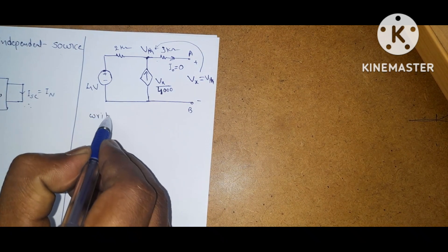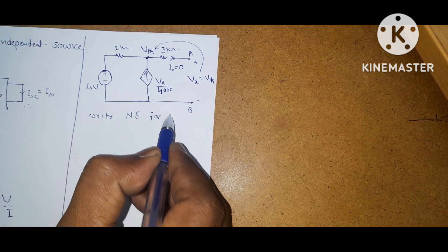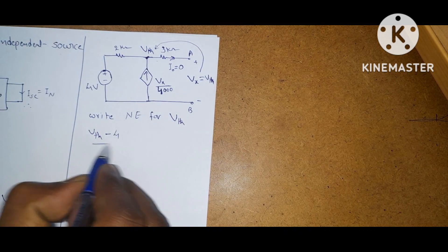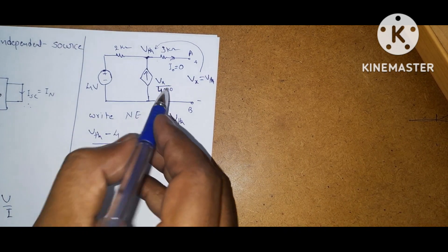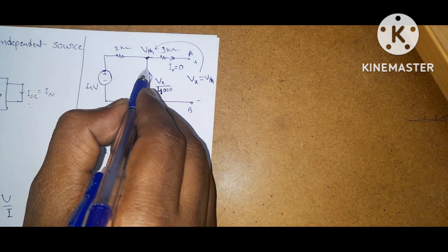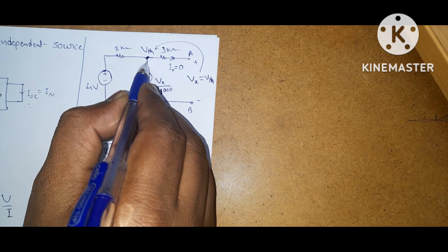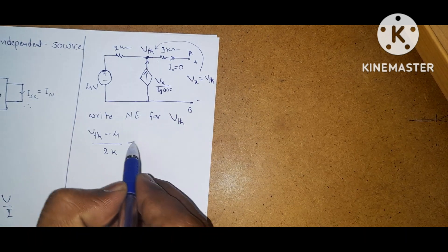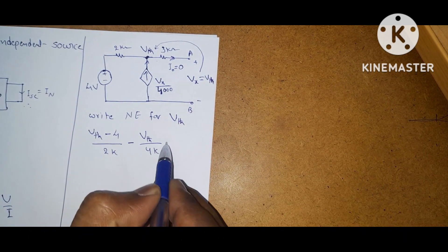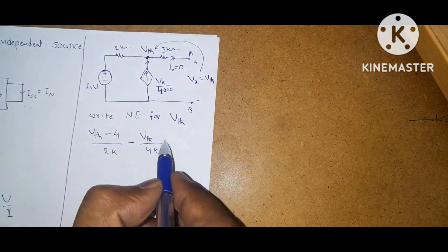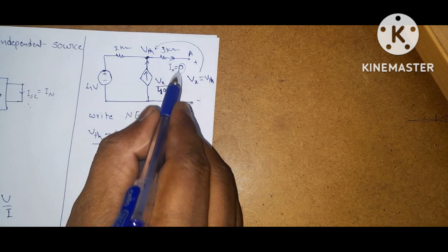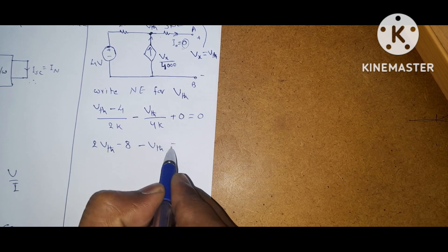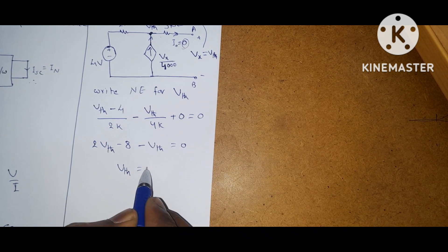Now apply nodal analysis for V Thevenin. The node equation for V Thevenin: (V Thevenin minus 4) by 2kΩ — this current source is entering towards this node — minus Vx by 4k, where Vx equals V Thevenin. Current is leaving from this node, so it equals 0. This gives 2·V Thevenin minus 8 minus V Thevenin equals 0, therefore V Thevenin equals 8 volts.